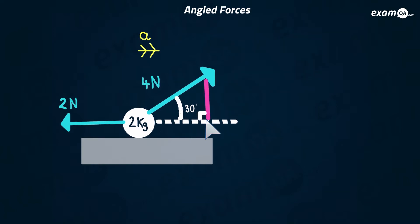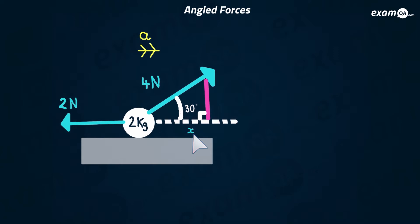We need to work out what horizontal value that four Newtons has in order to resolve all forces on this particle horizontally. The way to do it is to make it into a right-angle triangle — extend a couple of lines to form a right-angle triangle with that four Newton force, giving one side as four Newtons, one side horizontal, and one side vertical, with the horizontal side labelled X.